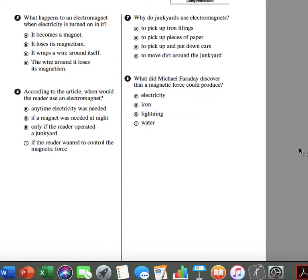Number 6. According to the article, when would the reader use an electromagnet? F. Anytime electricity was needed. G. If a magnet was needed at night. H. Only if the reader operated a junkyard. I. If the reader wanted to control the magnetic force.